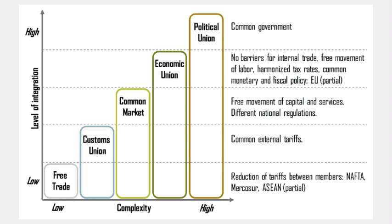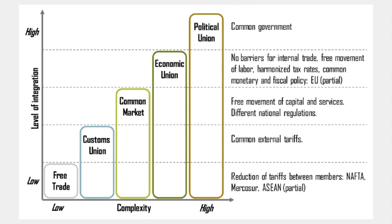The 10th question was about the European Union — how many members does it have presently? The answer is still 28 because the UK has not yet exited. The plan to exit is popularly called Brexit, the exit of Britain from the European Union. But the more important question is: what exactly is the European Union, and what kind of union is it out of these five types? Countries around the world can enter into one or many of these unions, from a free trade agreement to a political union. In this process, we'll understand where the EU lies and what agreements India has.